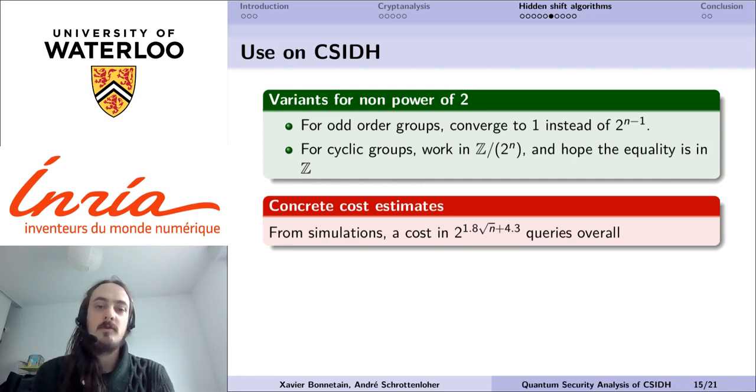But there is another approach which is that for cyclic groups, or groups that have a huge cyclic component, as it is the case in CSIDH, we can work modulo a power of 2 and hope that the final equality will hold over the integers and not only over modulo 2 to the n, and in that case we will obtain the label we want.